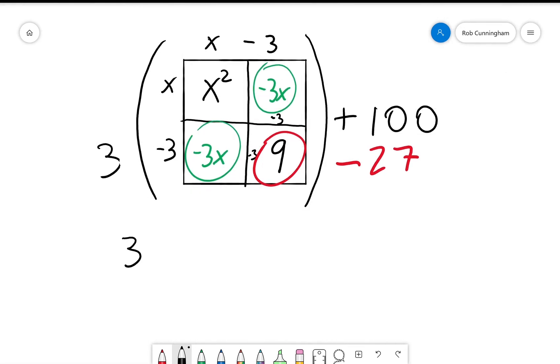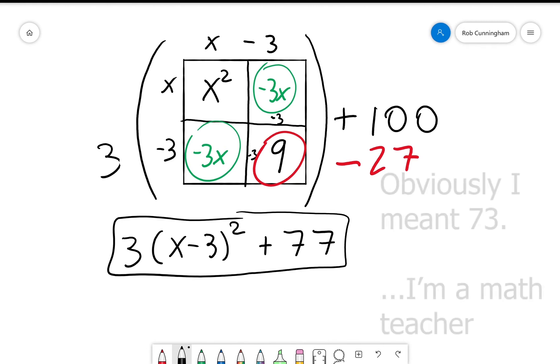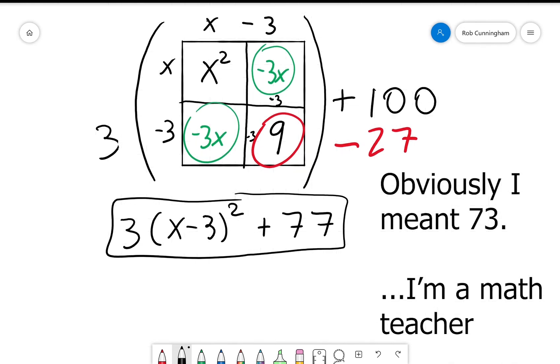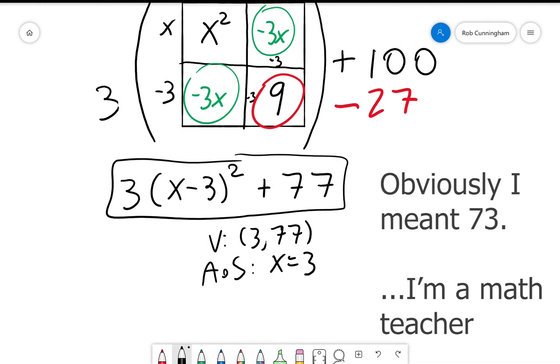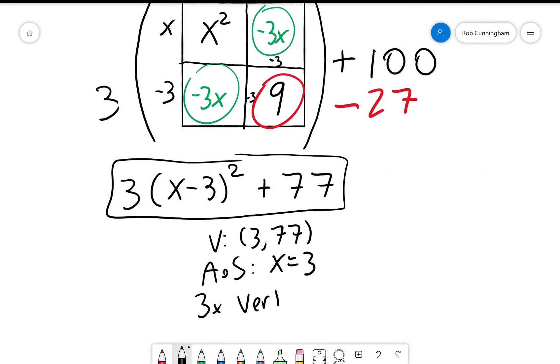So I hope this diagram makes sense because this diagram is literally the equation, right? We just need to take away the drawings and put in just the letters and numbers. We get 3 times x minus 3 squared, again, that's this whole thing right here, plus 100 minus 27, some quick mental math, plus 77. And because I haven't been doing it so far this video, the vertex is therefore 3 comma 77. The axis of symmetry is x equals 3. And there is a 3 times vertical stretch.